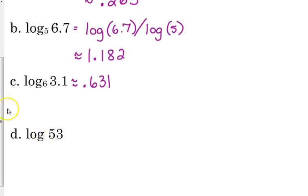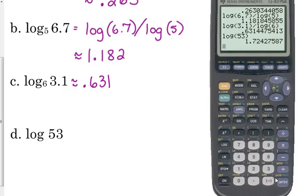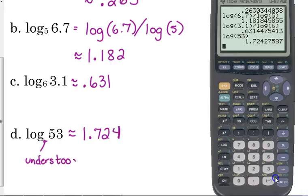Now, sometimes you won't have a base. In that case, you can just type that straight into your calculator. Log of 53, you just type it straight into your calculator. You don't have to do change of base, so that means 10 to the 1.724 power is equal to 53. So if there's no base, it's an understood 10.